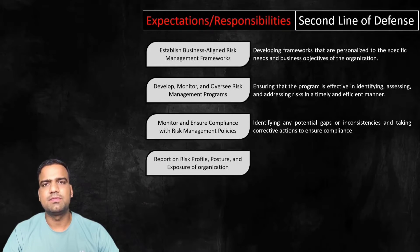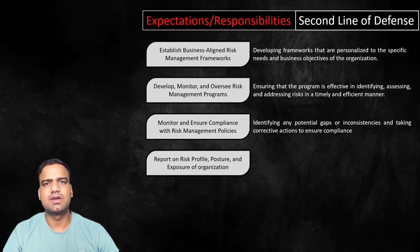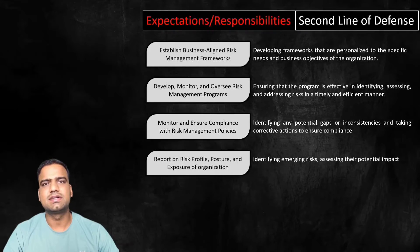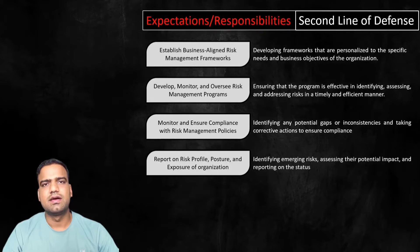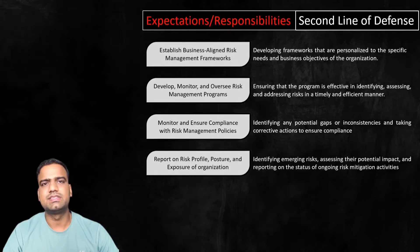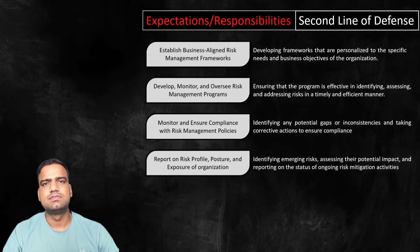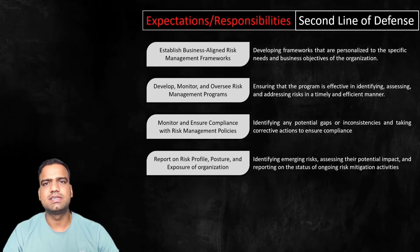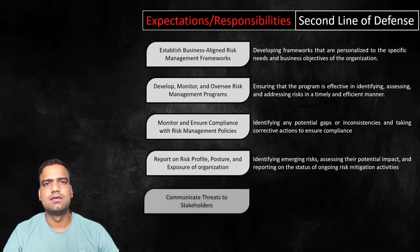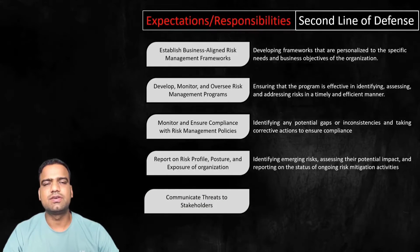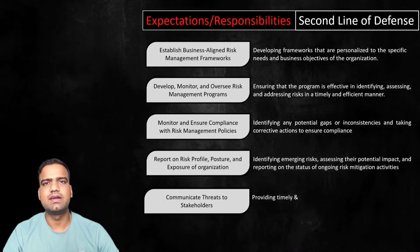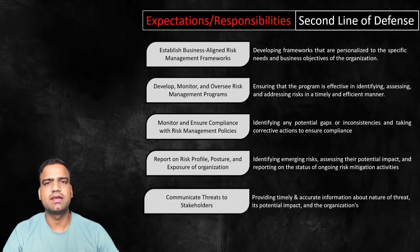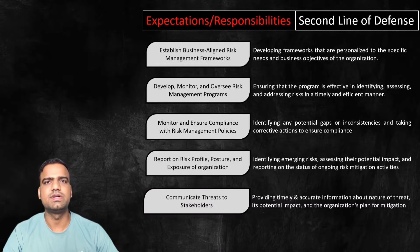The second line is also responsible for regular reporting on the risk profile, posture, and exposure of the organization. This includes identifying emerging risks, assessing their potential impact, and reporting on the status of ongoing risk mitigation activities. Changes in the organizational environment might also result in changes in the risk profile. Additionally, communicating threats to stakeholders includes providing timely and accurate information about the nature of a threat, its potential impact, and the organization's plan for mitigation.